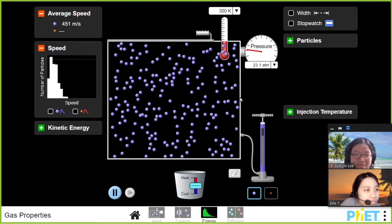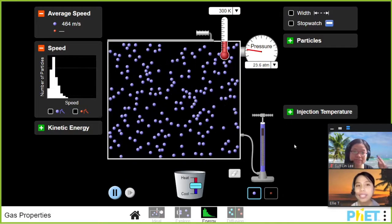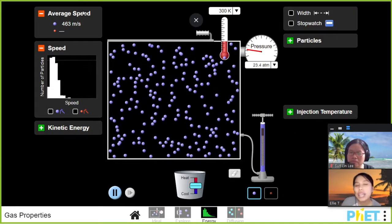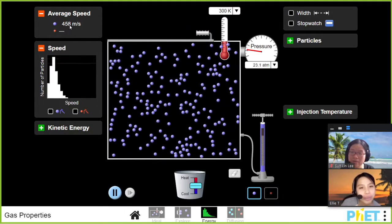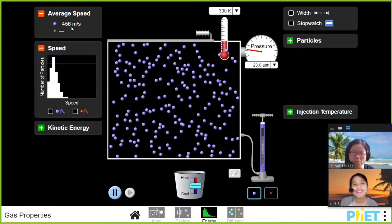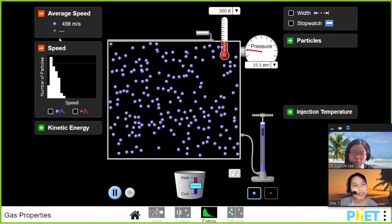That is the second question to think about. If you notice, on the top left, there is a little number there called average speed. How do they find this average speed? Think about that. You will look into that more in the next part.